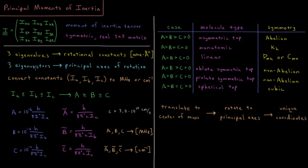There are also going to be three eigenvectors, and these are what we call the principal axes of rotation. The eigenvalues tell us how difficult it is to rotate around the principal axes, and the eigenvectors tell us what those principal axes are. We want to convert these eigenvalues into more convenient units, so we sort them in ascending order — Ia ≤ Ib ≤ Ic — increasing resistance to angular acceleration — and convert to units of megahertz or wavenumbers.